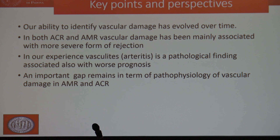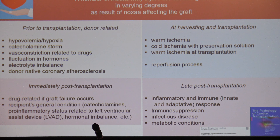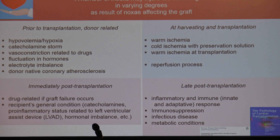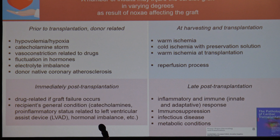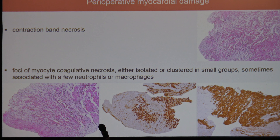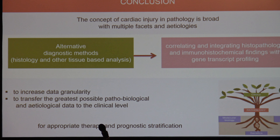The last speaker for this topic was Ronel Alion from Bologna, speaking about injury in the myocardium. Injury in the myocardium depends on many causes — before, during, early after, and late after transplantation — and there are many causes. So it is difficult, by simple observation of a microscope or using molecular methods, to determine whether it is rejection or non-rejection. We have to integrate the observation of myocyte damage into the full background. One cause, but not the only one, is ischemic damage, frequently observed in the early phase post-transplantation in the setting of primary graft dysfunction. So the concept of cardiac injury in pathology is broad, with multiple facets and etiologies.